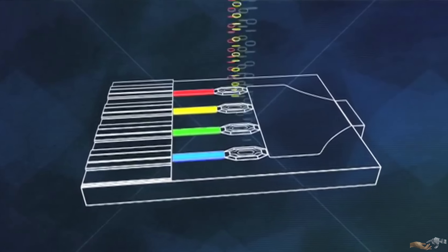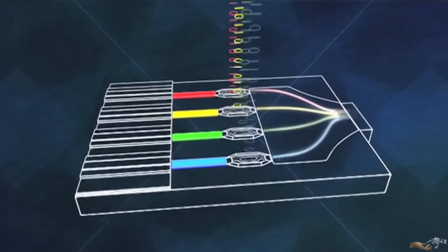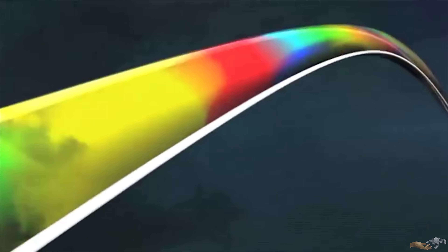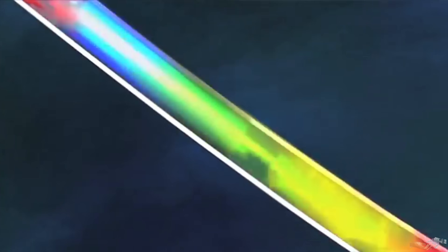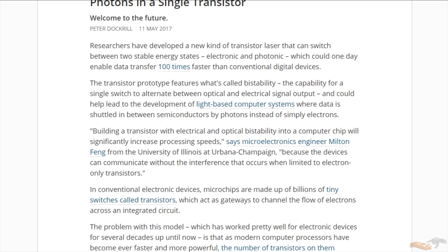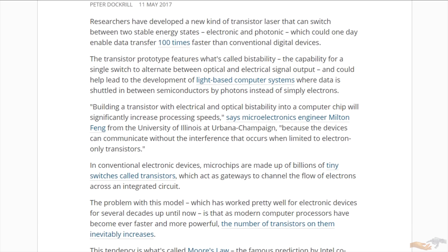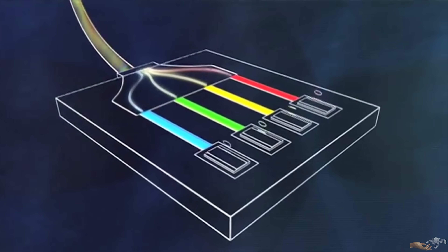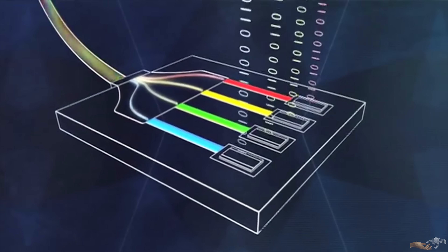There are many other optical and optoelectronic devices in research and development — with optoelectronic devices mixing both electron and photon-based computation. For example, transistors that can switch between both electron and photon domains, and Intel's optical multiplexers that convert between optical and electronic signals.